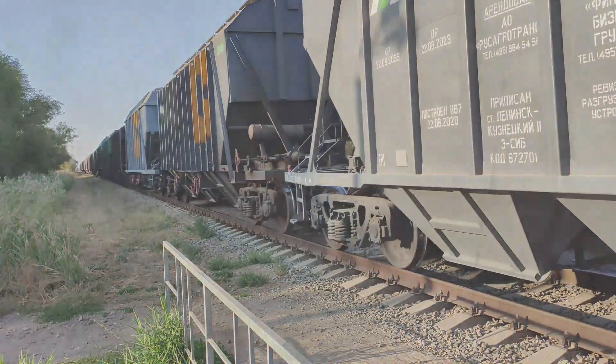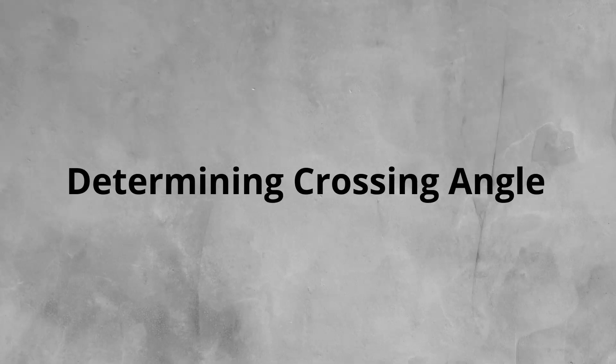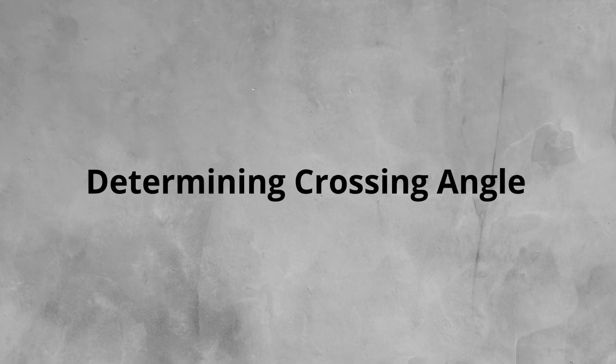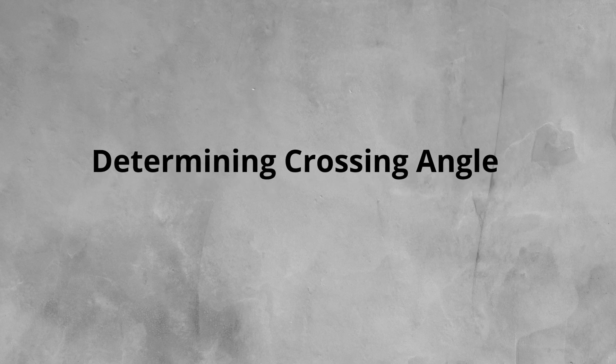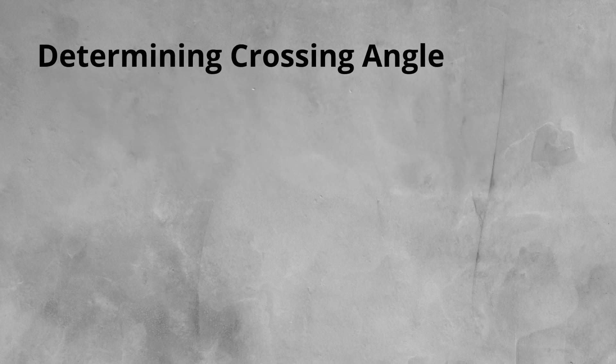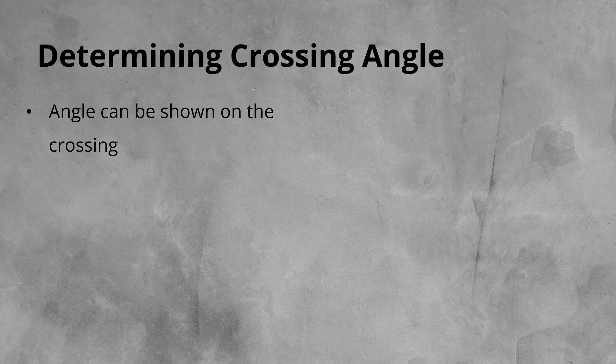So if we are on site looking at a crossing, how do we determine the crossing angle? The first port of call should be to inspect the crossing all over. It is usual to have the crossing angle on the crossing somewhere.